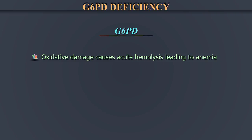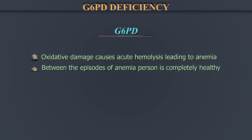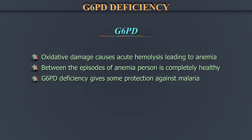Oxidative damage can cause acute hemolysis leading to anemia. Between the episodes of anemia, the person is completely healthy. Interestingly, G6PD deficiency gives some protection against malaria.